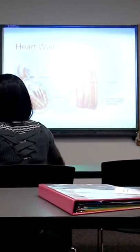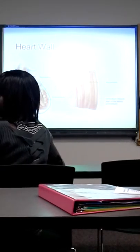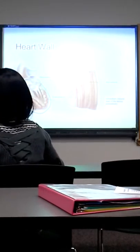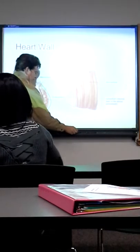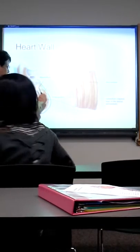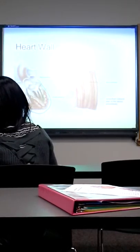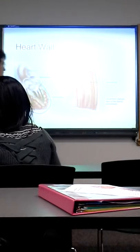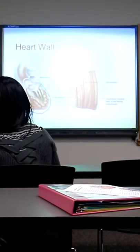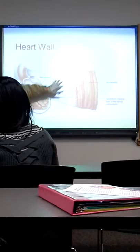If we open up the heart, there are three distinct layers of the wall of the heart. The outer layer is a membrane called the epicardium, also known as the visceral pericardium. The thick layer of muscle of the heart is called the myocardium.